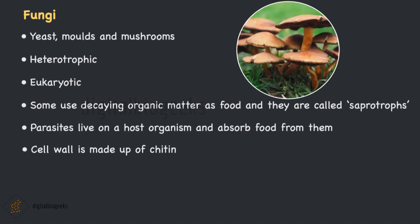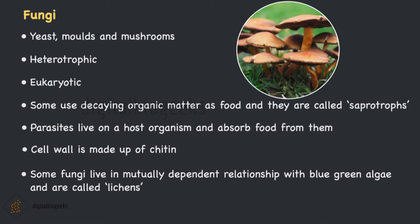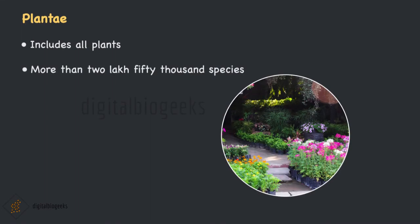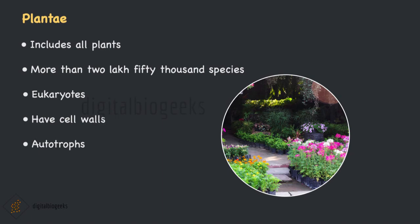In symbiosis, two species live in close relation with each other in which at least one species benefits. Some fungi live in a mutually dependent relationship with blue-green algae, and this relationship is called a symbiotic relationship. This blue-green algae and fungi relationship forms what are called lichens. We can see lichens as slow-growing, large, colored patches on the bark of trees. Kingdom Plantae includes all plants. There are more than 250,000 species in this group. They are eukaryotes with cell walls and are autotrophs, meaning they can prepare their own food by means of photosynthesis.